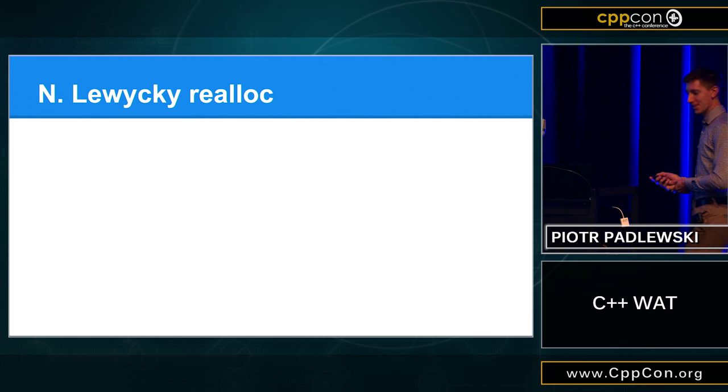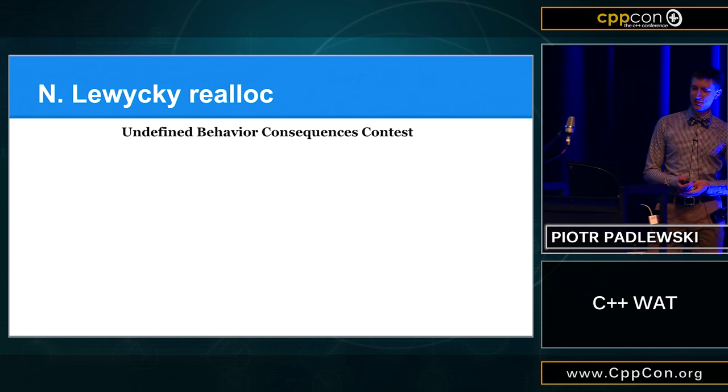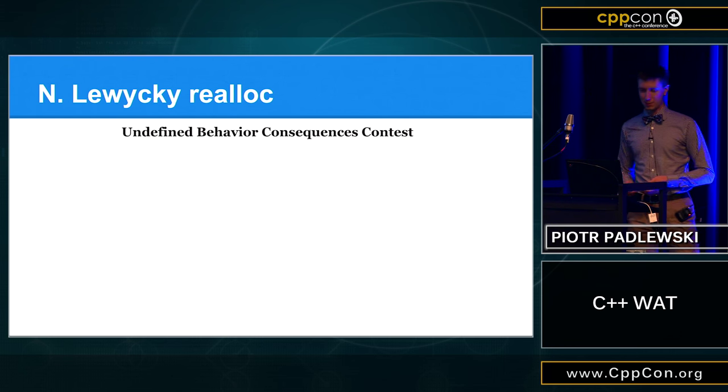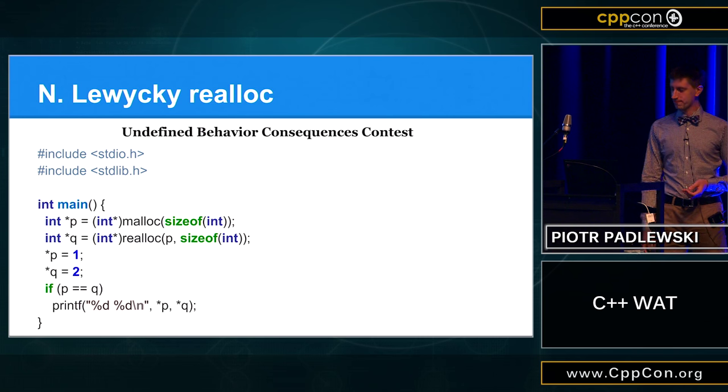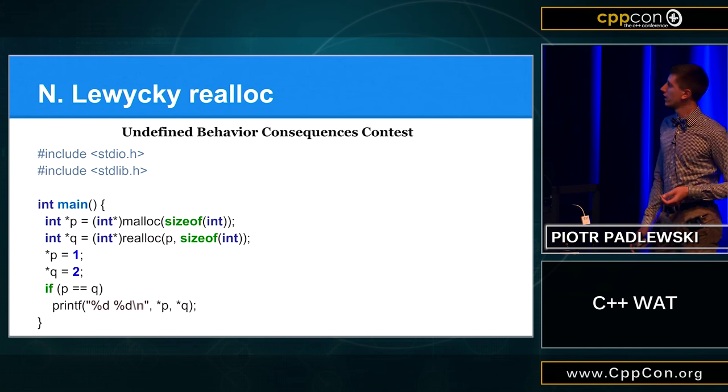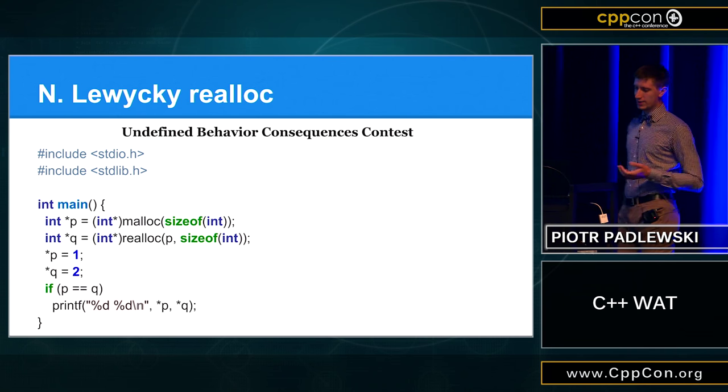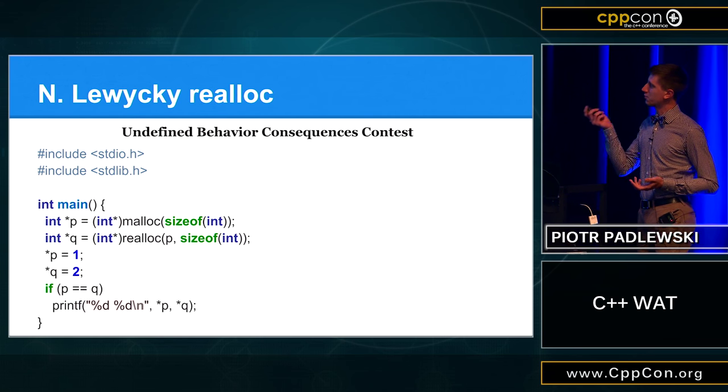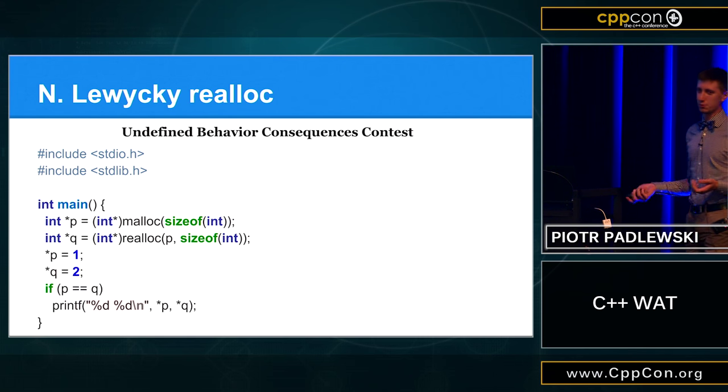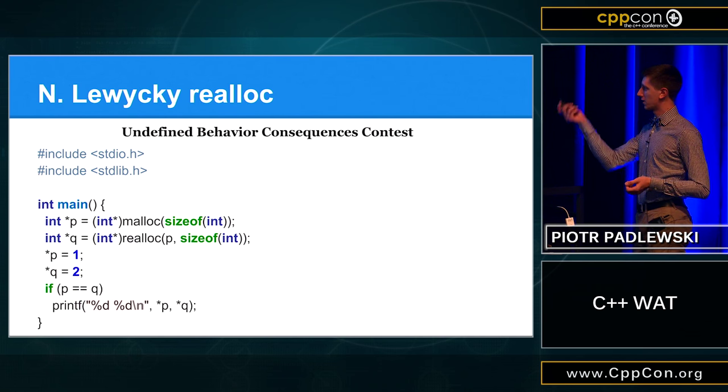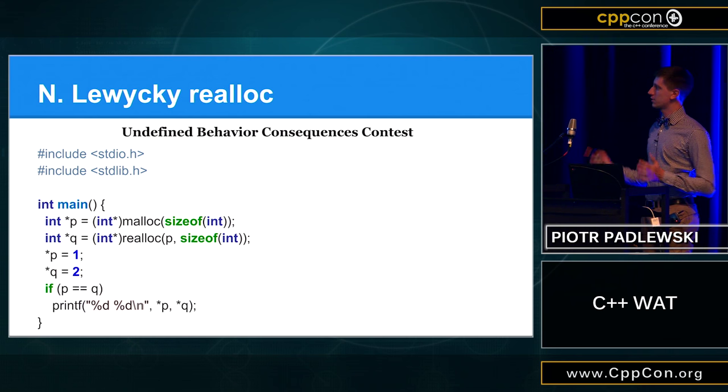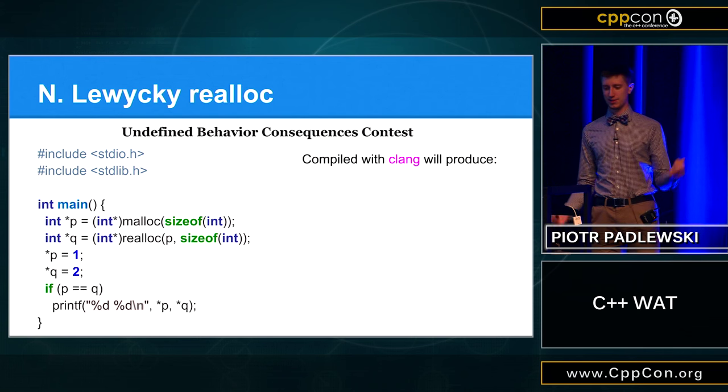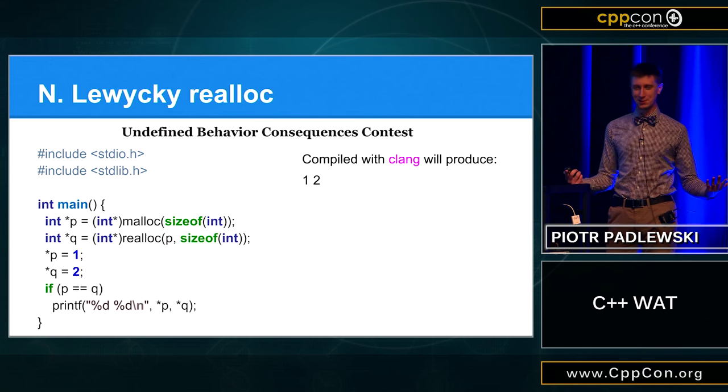So, let me tell you a story about Nick Levitsky-Realloc. So, there was a contest called Undefined Behaviour Consequences Contest. And Nick was working in LLVM Clang team in Google. And he found out this code, which has undefined behaviour, but you can probably not see it on the first time. And what he did is he wrote a special thing to the compiler, so it will compile it in a funny way. So, as you can see, this code is very easy, right? We are calling malloc, then we are calling realloc on the same pointer, which will return the same pointer. Then we are putting one to this pointer, then two. And just to make sure we are checking if p equals q. And if you will compile it with Clang, you will be like, yeah, so I have these two pointers that point to the same value, which is one and two. Right? This is like... And I'm not even mad about this.